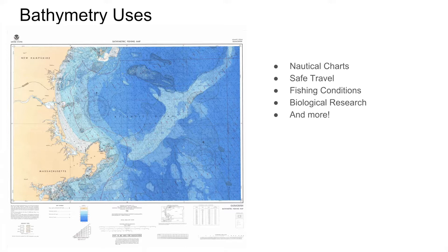Additionally, having accurate bathymetry data helps us more accurately determine the changes in sea level due to climate change. If we have accurate recordings of the ocean levels from one year to the next, we can determine how the ocean is changing and how we might adapt to those changes. Bathymetry can also be used for fishing conditions, and some maps mix in fishing condition information with the bathymetry map.